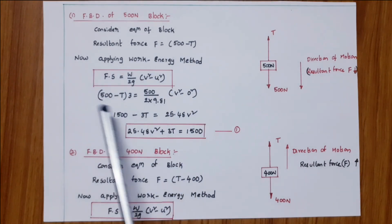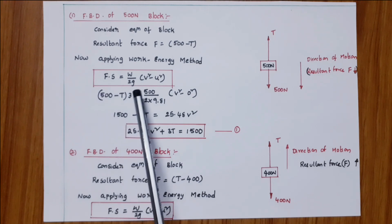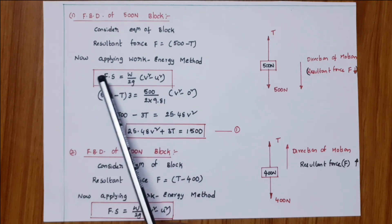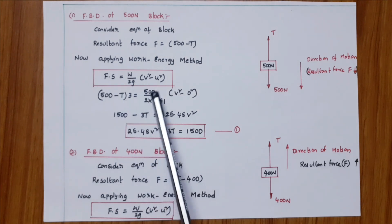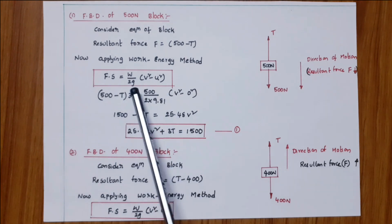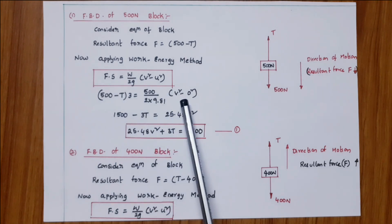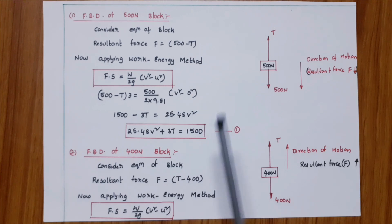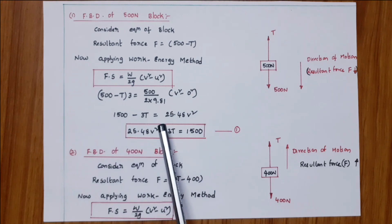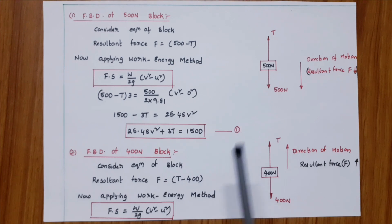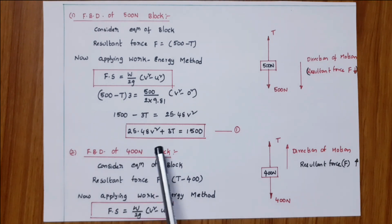Applying work-energy method: F times s equals W over 2g times (v squared minus u squared). Here F equals 500 minus T, s equals 3, W equals 500, g is 9.81, and u equals zero. This gives 1500 minus 3T equals 25.48 v squared, so 25.48 v squared plus 3T equals 1500. This is equation number one.